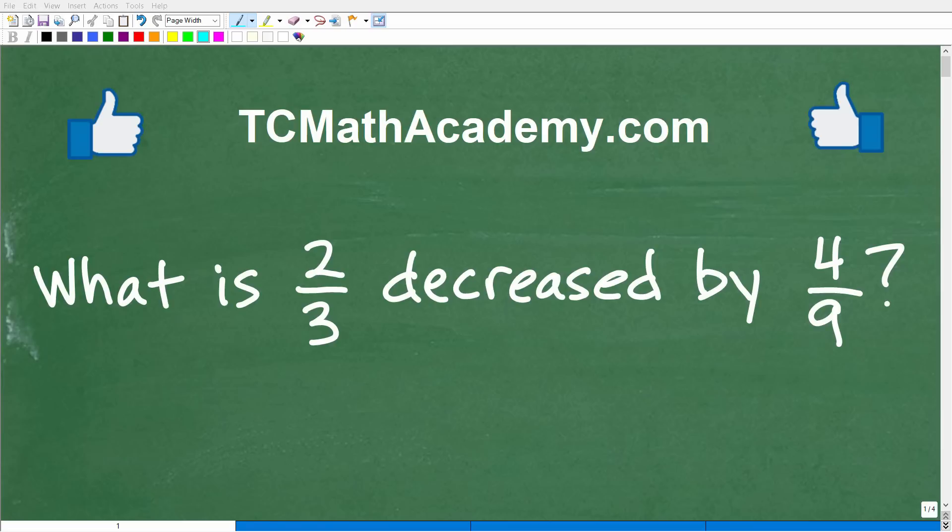Okay, so let's see if you can figure out this basic math problem without using a calculator. And the question is the following: what is two-thirds decreased by four-ninths? Alright, so again, that is the question and no calculators, but if you have the answer, go ahead and put that into the comment section.